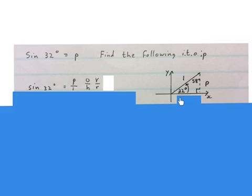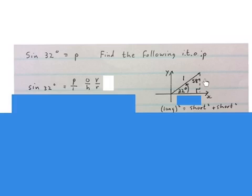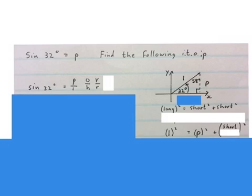Then we have to work out the missing side here. You don't have to put this triangle on a Cartesian plane, I do. Now I use Pythagoras to work out the missing side. Long square equals short square plus short square. Then you fill in the numbers. The 1 goes over here. The P goes over here.